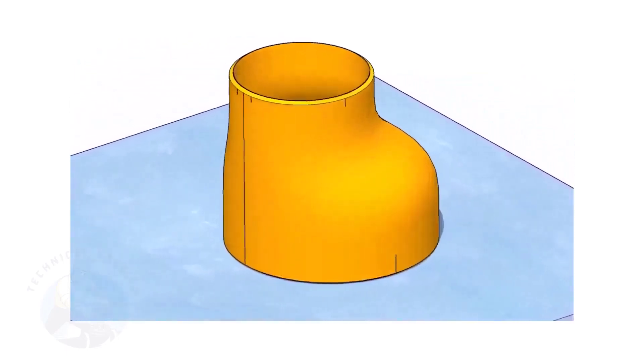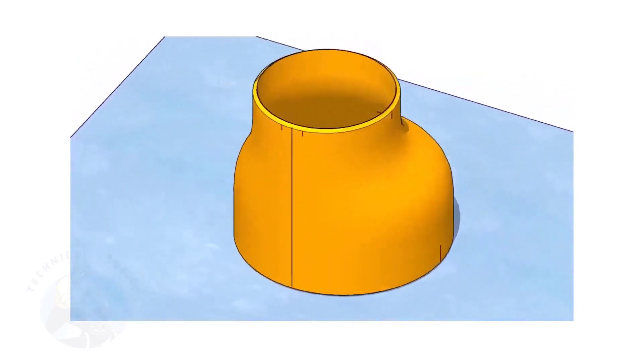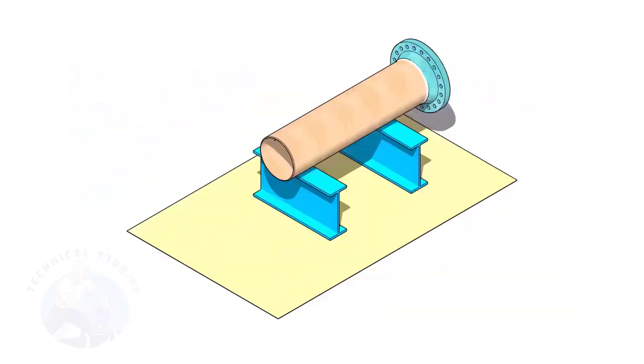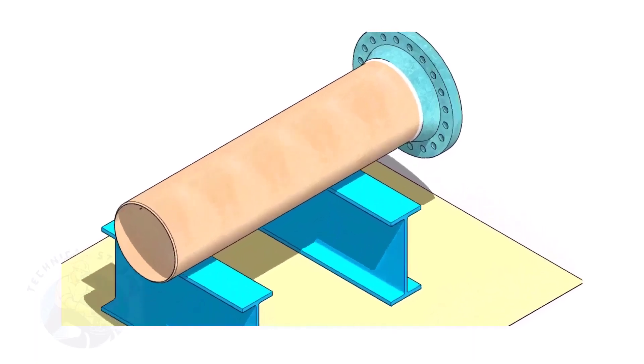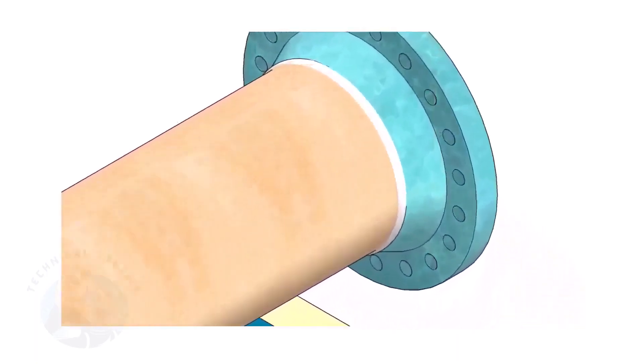Remember, the sequence of the fit up is more important. Assume that the flange is welded to the pipe. Put the spool on suitable supports.